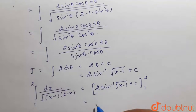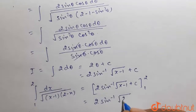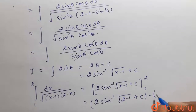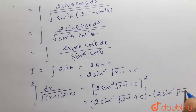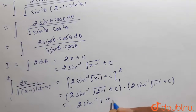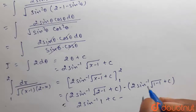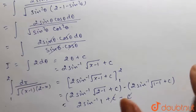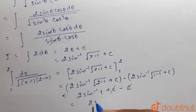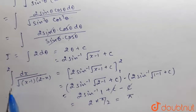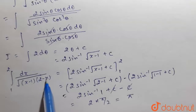Now, first we will put the upper limit, so it will be equal to 2 sin inverse under root (2 minus 1) plus C. Then minus, we will put the lower limit, that is x equals to 1, so it will be 2 sin inverse under root (1 minus 1) plus C. So, from here we get 2 sin inverse — 2 minus 1 is 1 and square root of 1 is 1 — so it will be 2 sin inverse 1, then plus C, minus 2 sin inverse 0 — and sin inverse 0 is 0 — so it will be 0, then minus. Plus C and minus C will cancel out. So, this will be equal to 2 sin inverse 1. Now, the value of sin inverse 1 is pi by 2. So, it will be 2 into pi by 2, which is equal to pi. So, the value of integration from 1 to 2 of dx divided by under root of (x minus 1) into (2 minus x) is pi. This is the solution of the given question.